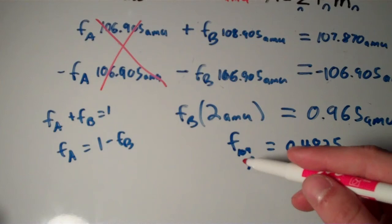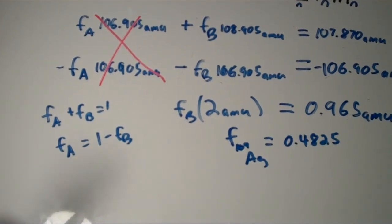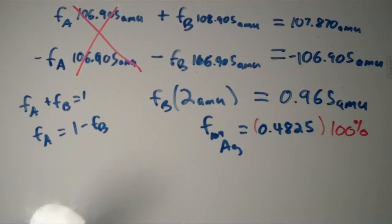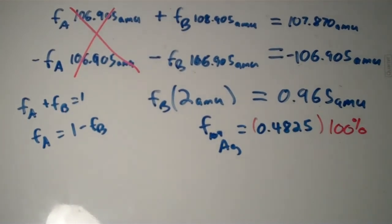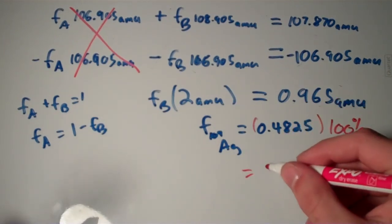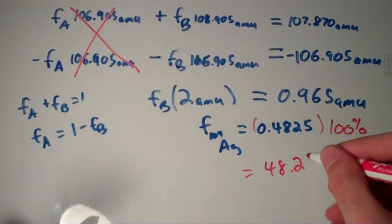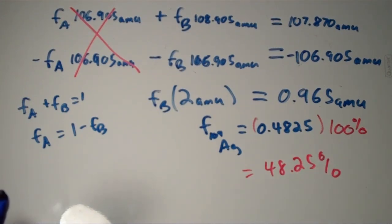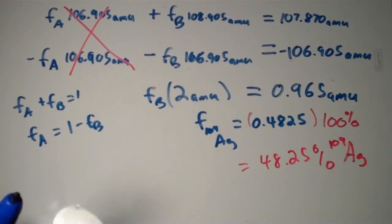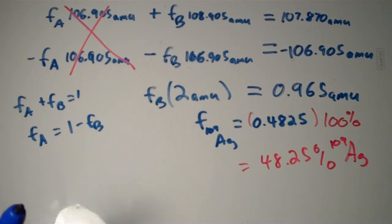One more thing. If we have the fraction of silver 109 and we want to convert that into a percent abundance, we simply multiply by 100%. Which means we'll just be moving the decimal point two places to the right. So this would be 48.25% silver 109. So that is how you solve this problem using a system of two equations.